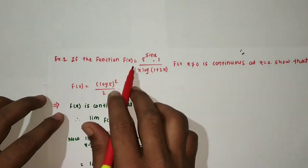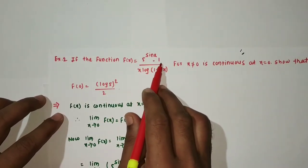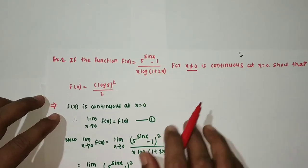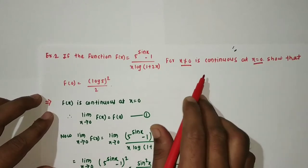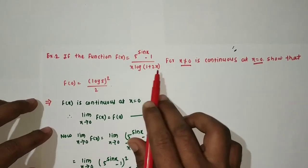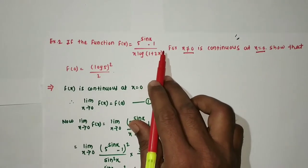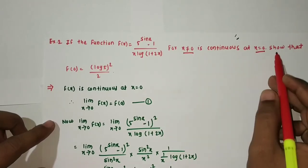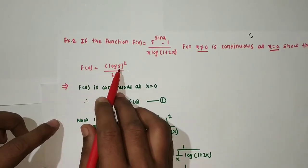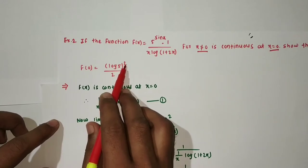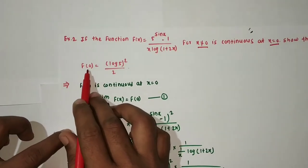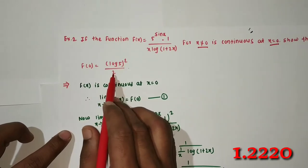Example 2: If the function f(x) = (5^sinx - 1)² / [x · log(1 + 2x)] for x ≠ 0 is continuous at x = 0, then show that f(0) = (log 5)² / 2. Since the function is continuous at x = 0, we need to show the left hand limit equals the right hand limit equals the functional value.